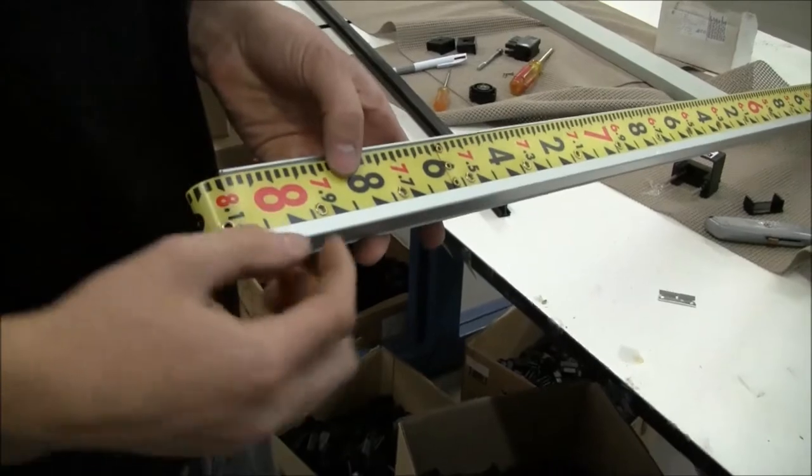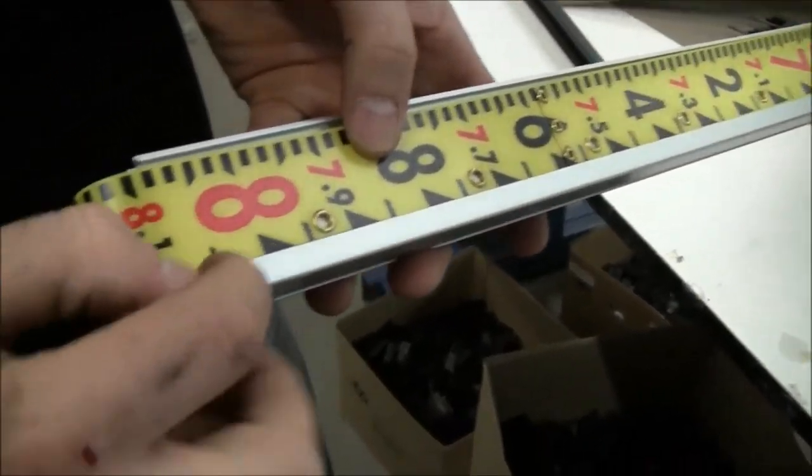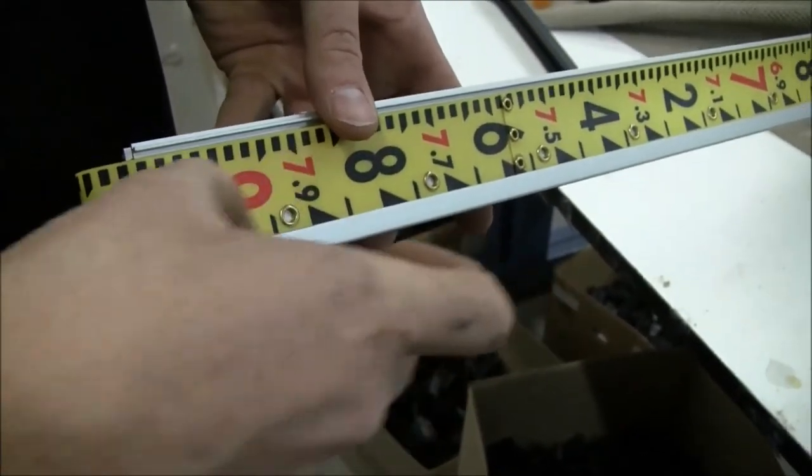Another thing to mention: the grommets in the tape go towards the bottom, otherwise it's going to be upside down. The grommets have to be where the groove is.